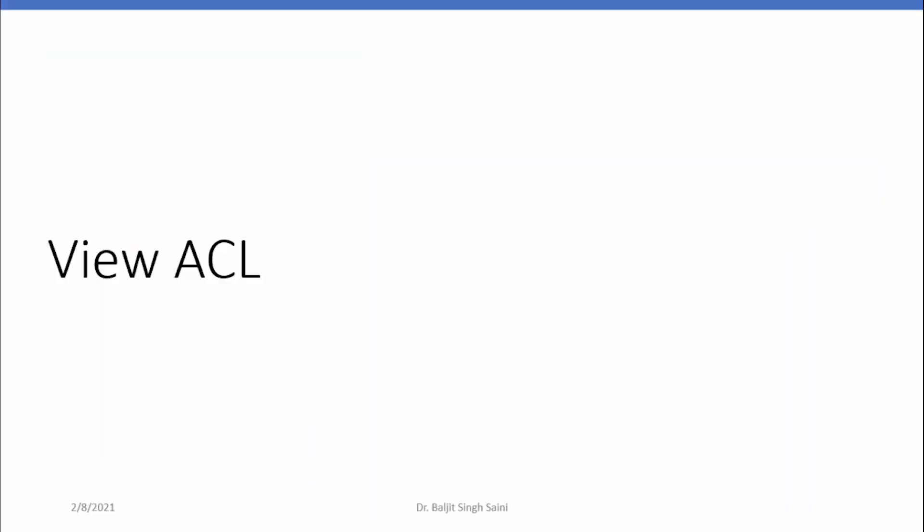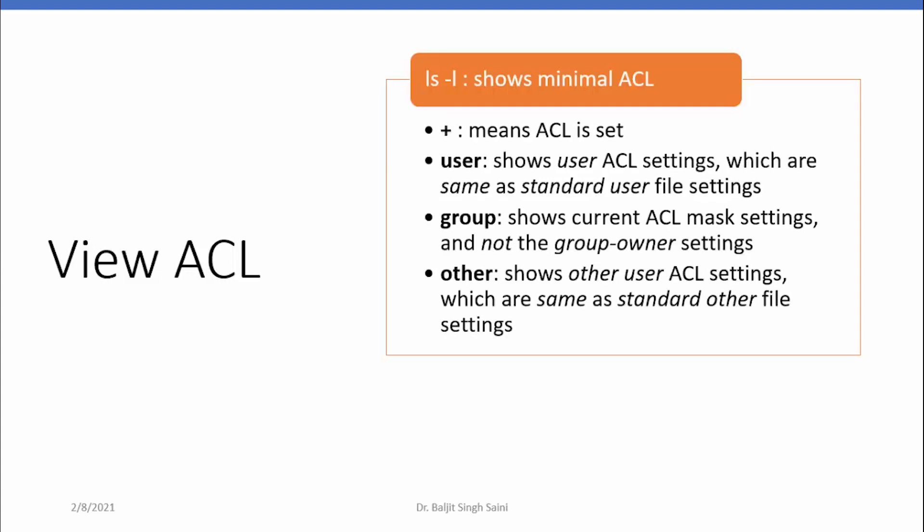Next is how to view ACL. You can use the ls -l command, and if you see a plus sign at the end of the permissions this means that ACL is set on that file or directory. Whatever permission you see for the user are the user owner permissions, but whatever permissions you see under the group are not for the group owner — they are actually the mask. So if the ACL is set, the permissions shown under the group are the mask, not the group owner permissions.